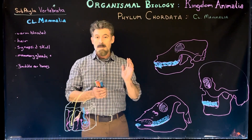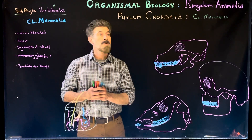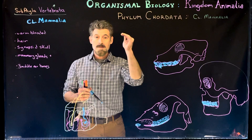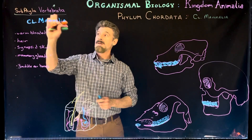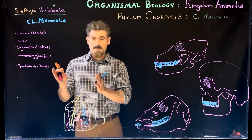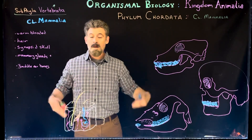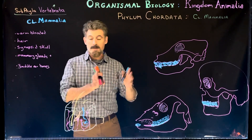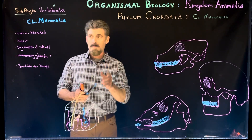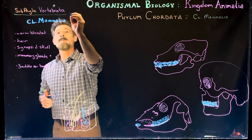Mammals are our final group of animals before we move on to other topics. They are chordates, belonging to phylum Chordata and subphylum Vertebrata. They have a cranium and vertebrae as part of the axial skeleton, plus an appendicular skeleton with shoulder and pelvic girdles — similar in many ways to lizards, reptiles, and amphibians. Vertebrates are amniotes.